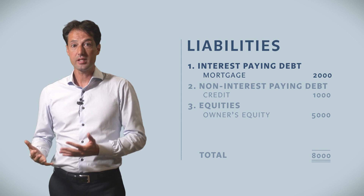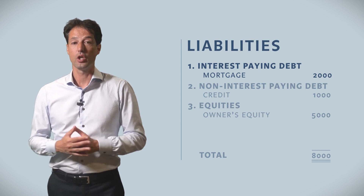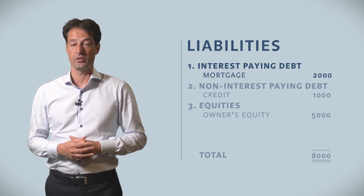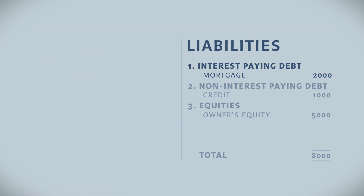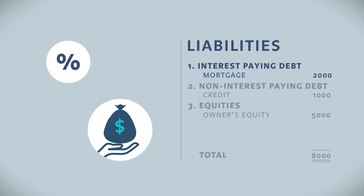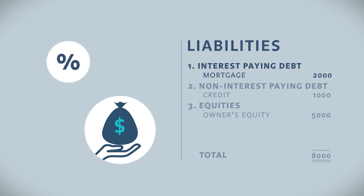On the right hand side you find a loan of 2000. This is a mortgage that we used exclusively to fund the factory. Remember that we need to pay interest on our mortgage, hence we call this an interest paying debt obligation.